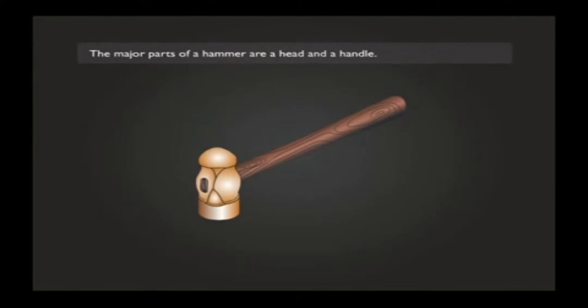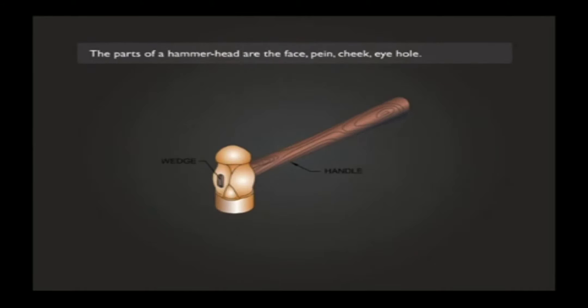The major parts of a hammer are a head and a handle. The head is made of drop-forged carbon steel, while the wooden handle must be capable of absorbing shock. The parts of a hammer head are the face, peen, cheek, and eye hole.